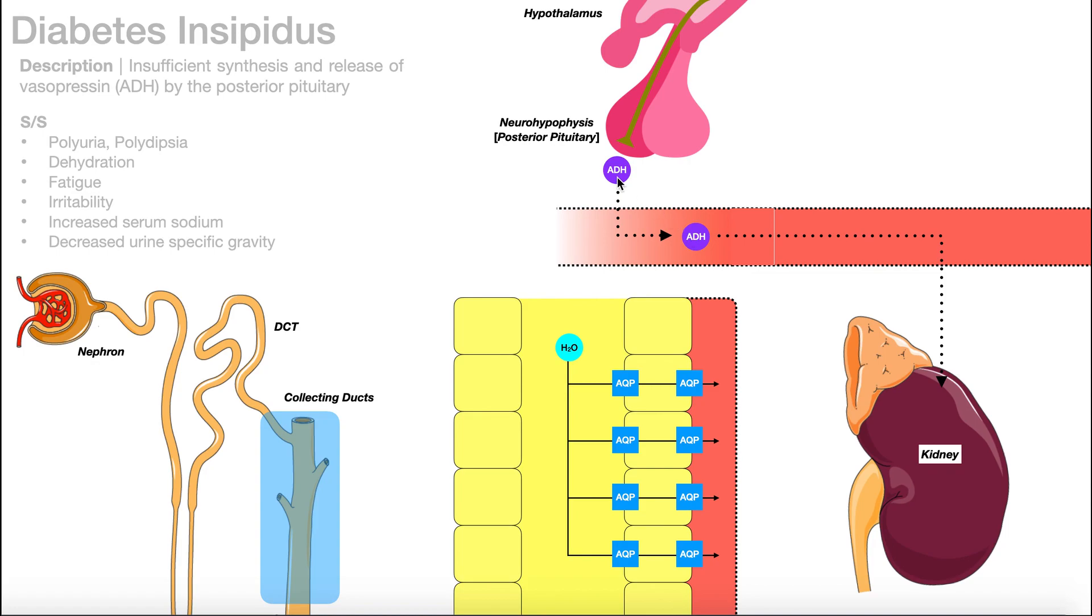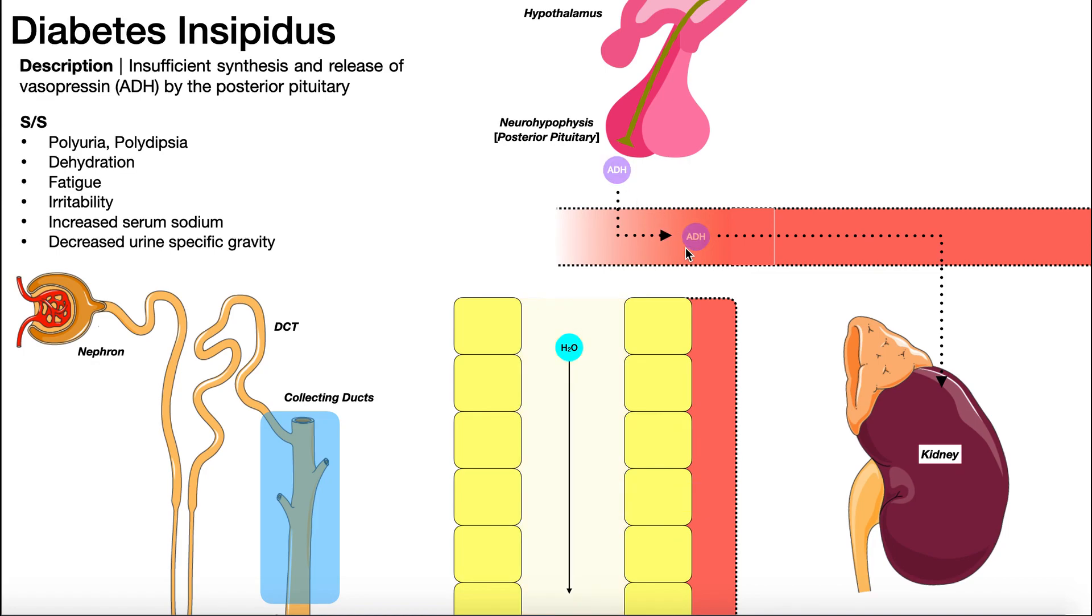Now what happens if we have a deficiency of antidiuretic hormone? That is what diabetes insipidus is. We have insufficient release of ADH from the posterior pituitary. So there's less ADH that acts on the kidneys collecting ducts. And so what do you think that's going to do to the amount of aquaporins here in the membranes of these cells that line the collecting ducts? There's going to be less aquaporins as you see right here.